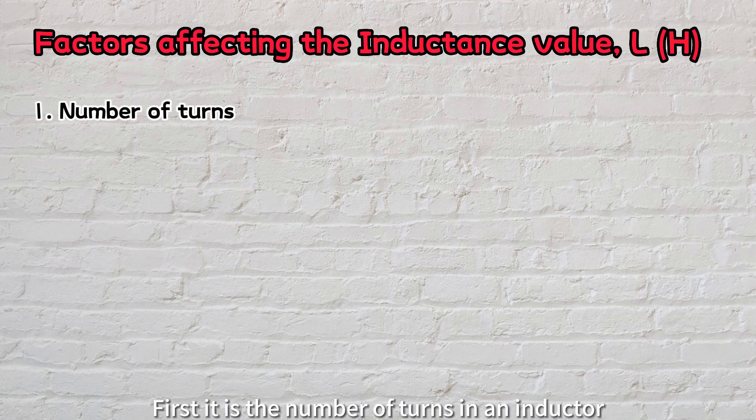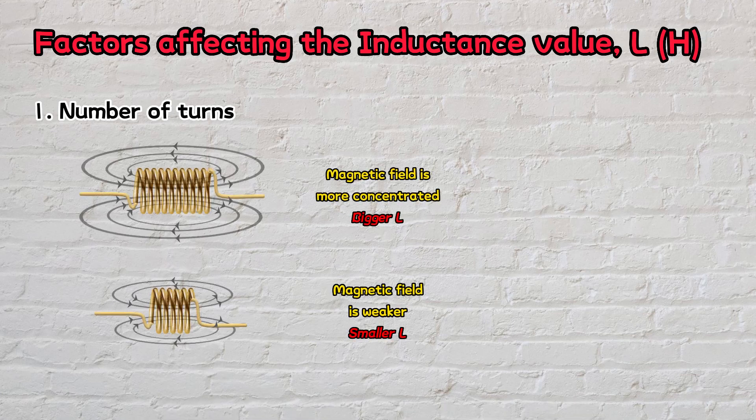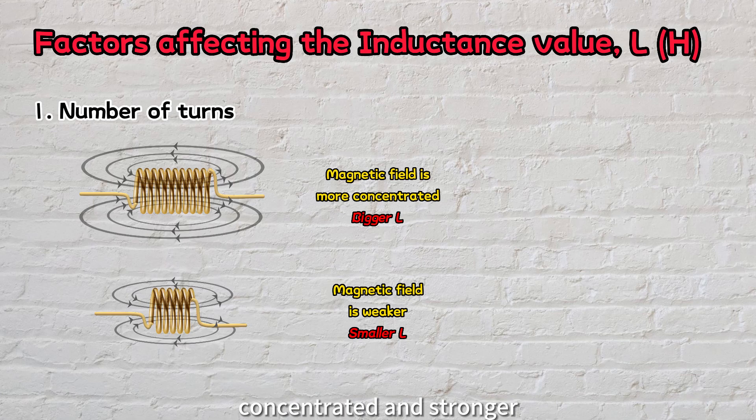First, it is the number of turns in an inductor. More turns mean higher inductance because the magnetic field becomes more concentrated and stronger, allowing the inductor to store more magnetic energy.